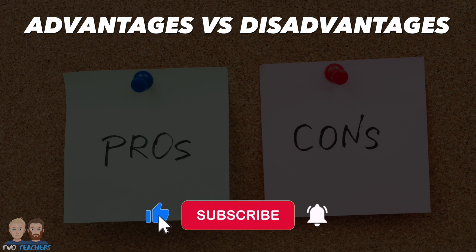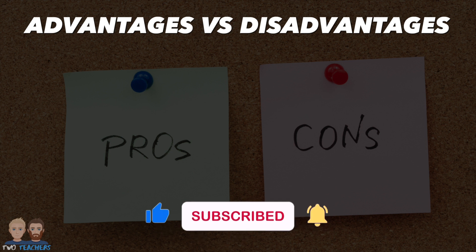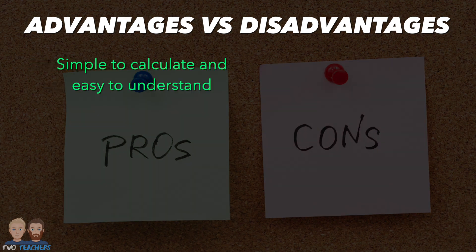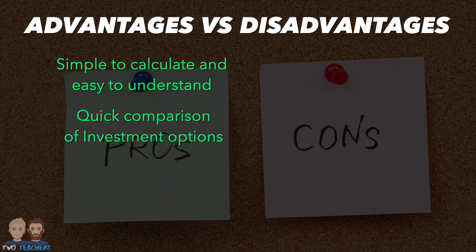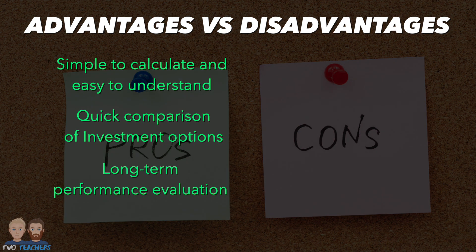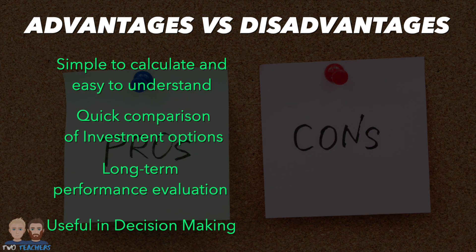Hopefully at this point you feel like you're gaining a good understanding of what the average rate of return is all about and how it is calculated. So let's finish by taking a quick look at the advantages and disadvantages of using the average rate of return calculation in business. Starting with the advantages: firstly, the ARR calculation is very straightforward and can be easily understood by investors and business professionals with varying levels of financial expertise. The ARR also enables businesses to quickly compare the profitability of different investment options, allowing them to make more informed decisions based on potential returns. By considering the average annual profit and the investment period, the ARR provides a long-term perspective on the performance and profitability of an investment, and businesses can use the ARR to assess the viability of potential investments and determine whether to pursue or abandon certain projects before risking their money.